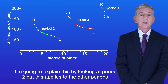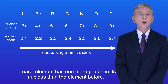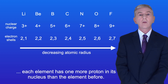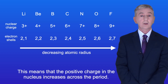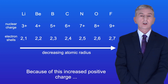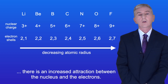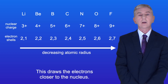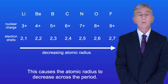I'm going to explain this by looking at period two, but this applies to the other periods. As we move across a period from left to right, each element has one more proton in its nucleus than the element before. This means that the positive charge in the nucleus increases across the period. Because of this increased positive charge there's an increased attraction between the nucleus and the electrons, and this draws the electrons closer to the nucleus, causing the atomic radius to decrease across the period.